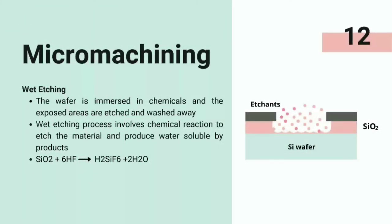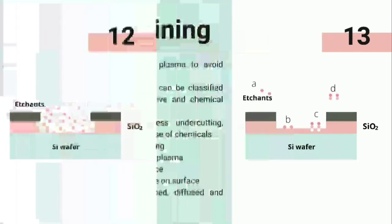Wet etching: here the wafer is immersed in chemicals and the exposed areas are etched and washed away. The wet etching process involves a chemical reaction to etch the material and produce water-soluble by-products.